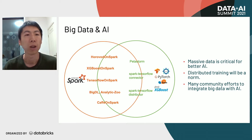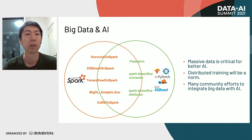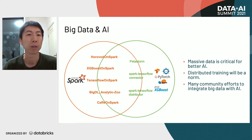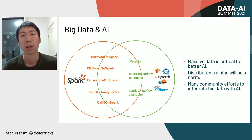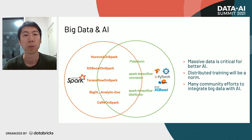First, as we know, big data and AI have been two different communities. On one side, Apache Spark is one of the leading big data frameworks, and it has been evolving quickly in the past 13 years. On the other side, there are many machine learning and deep learning frameworks that have appeared and become very popular. There are also more and more intersections between these two communities.